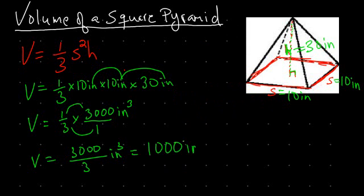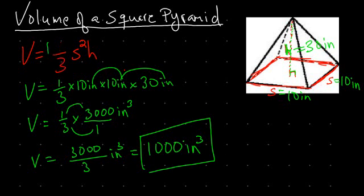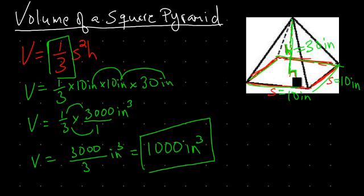So it's just a matter of knowing this formula. The area of the base times the height, with the one-third accounting for the fact that the pyramid gets smaller as it rises. Our total volume is one-third s squared times the height, where s squared is the area of the base and h is the height from the tip of the pyramid perpendicularly straight down. That concludes this introduction to the volume of the square pyramid.